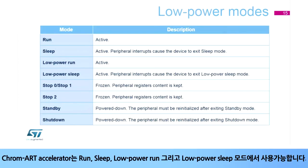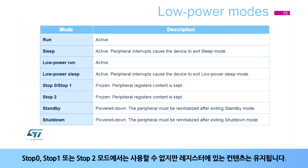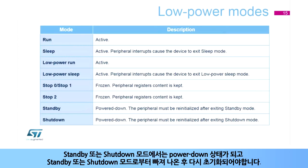The Chroma Art Accelerator is active in Run, Sleep, Low Power Run, and Low Power Sleep modes. In Stop 0, Stop 1, or Stop 2 modes, the Chroma Art Accelerator is not available, but the contents of its registers are kept. In Standby or Shutdown modes, the Chroma Art Accelerator is powered down and must be re-initialized when returning to a higher power state afterwards.